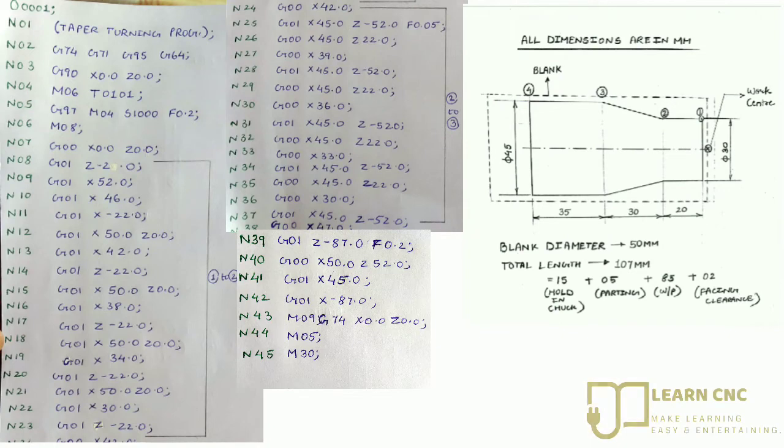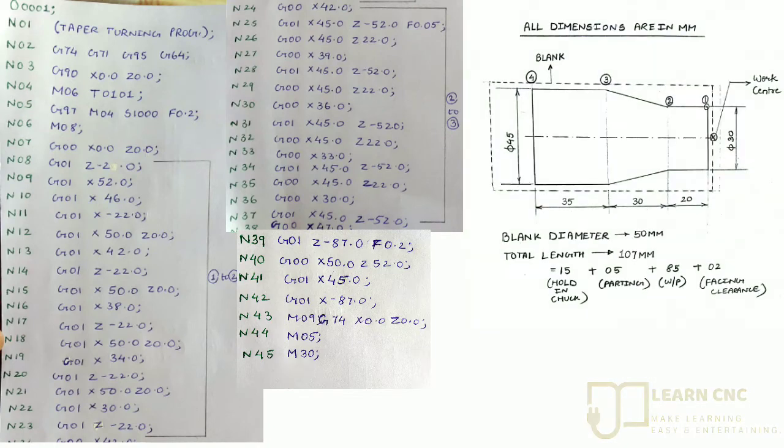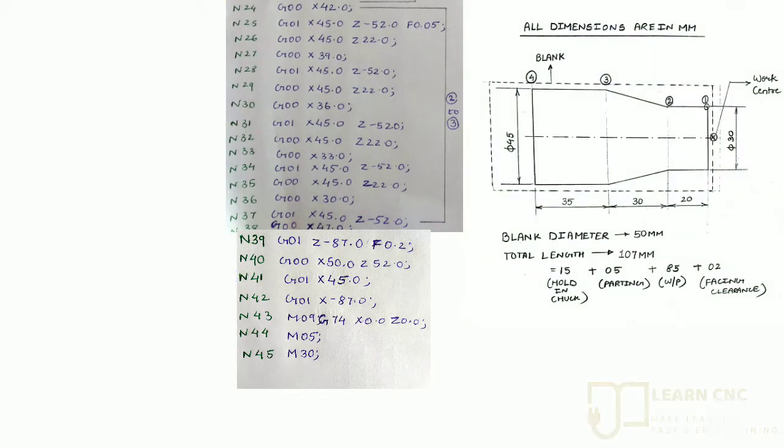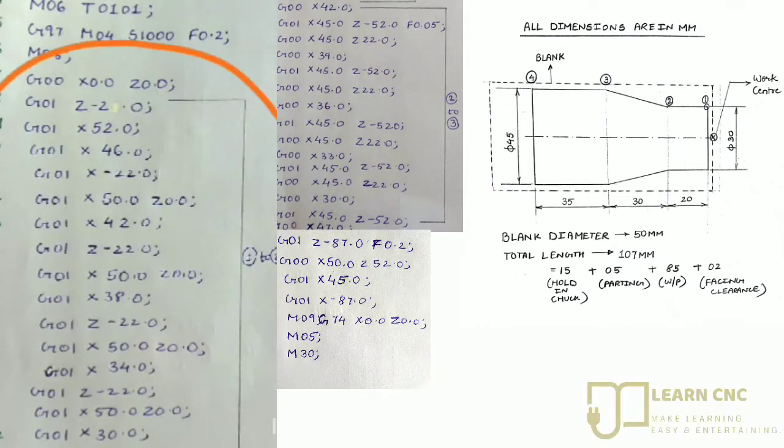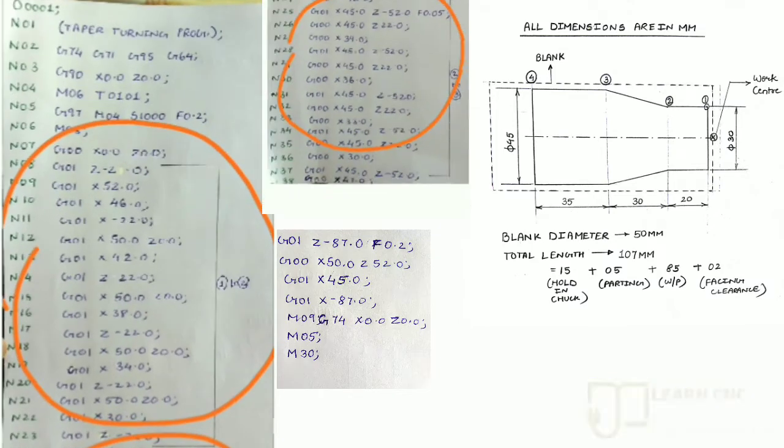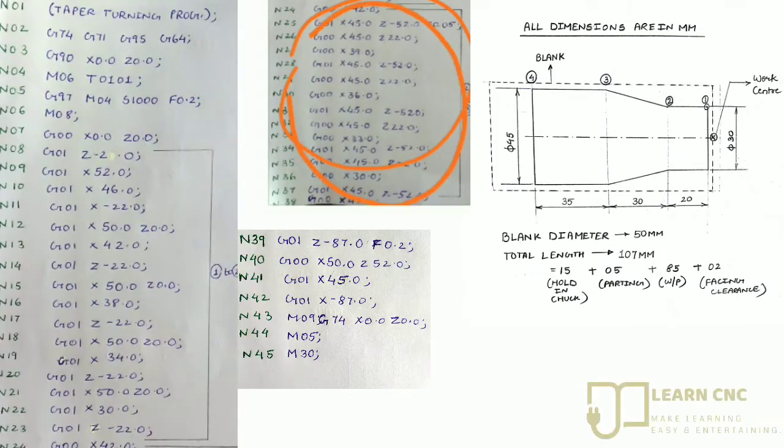The tool will be fixed right here in the turret. Now this much program is used to proceed from 1 to 2, and this much will be needed for 2 to 3. That is the main taper program.